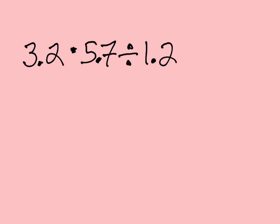It's really simple, and all we need to do is make sure we always follow order of operations and remember that the operator goes with the number following it. So 3.2 times 5.7 divided by 1.2 means that first we multiply 3.2 times 5.7.